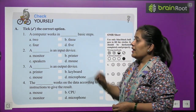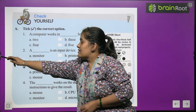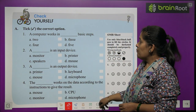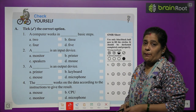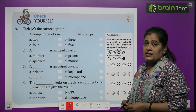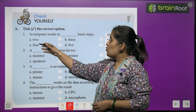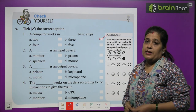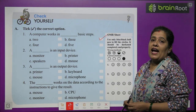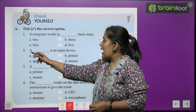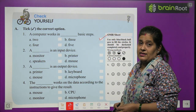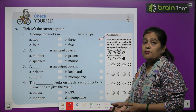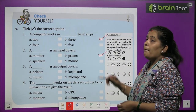Exercise one: pick the correct option. A computer works in how many basic steps? Two, three, four, or five? A computer works in three basic steps — input, process, and output. A dash is the input device: monitor, speaker, printer, or mouse? The input device among these is mouse.